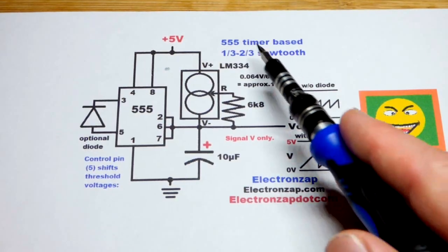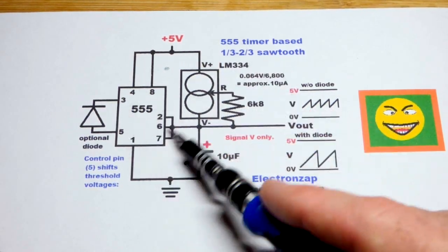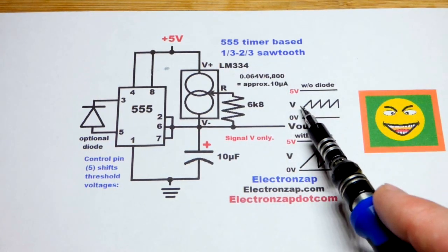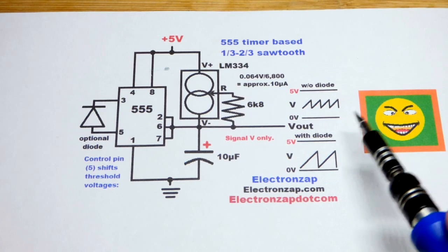So now in this video, we're going to make a 555 timer circuit that gives us a one-third to two-thirds of the power supply voltage sawtooth waveform.